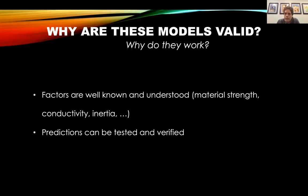So what's the message? Why are these models valid — why do they work? The factors that go into the model are very well known and well understood. When we ask whether a bridge will fail, we know the material strength of steel and aluminum. On an automobile or airplane, we know the heat conductivity and the inertia of a car around a curve. We put these in mathematical form and have the computer test them. Most importantly, if someone makes a prediction, you can test it — build a prototype, see if it holds, and if you were wrong, go back and fix things.